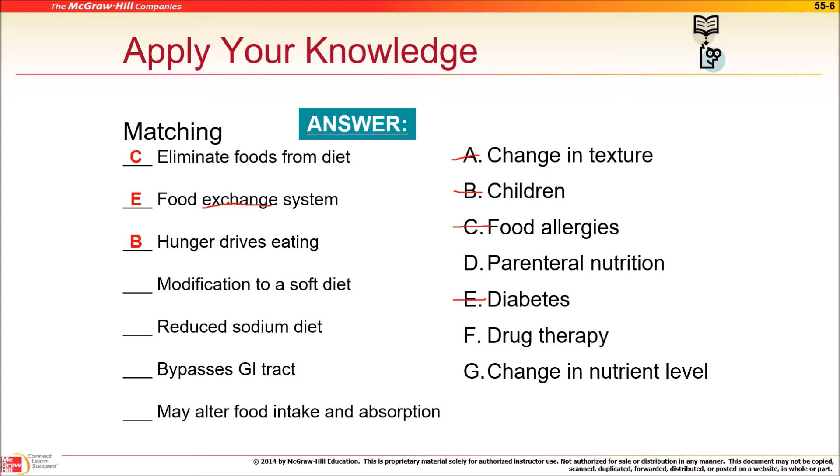Modified to a soft diet. This is texture. If they have partially paralyzed throat or can't swallow, might have Parkinson's, can't control their muscles anymore, then a soft diet. Liquids will make them choke. Reduce sodium. Bypasses the GI tract. Which one's IV feeding? Parenteral. Parenteral, that's tube feeding. May alter food intake and absorption? Drug therapy.